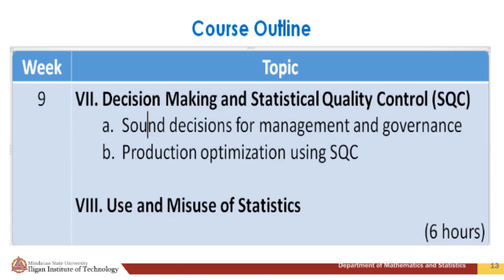The seventh and last topic will be on decision making and statistical quality control (SQC), where sound decisions for management and governance and production optimization using SQC will be discussed. The use and misuse of statistics will also be discussed here.